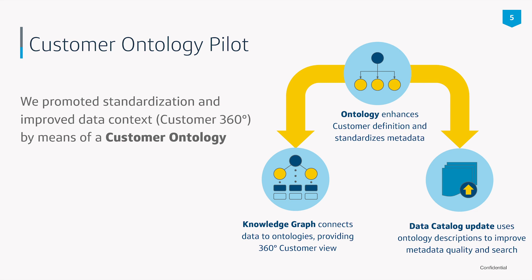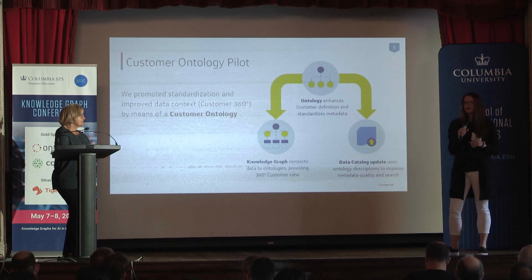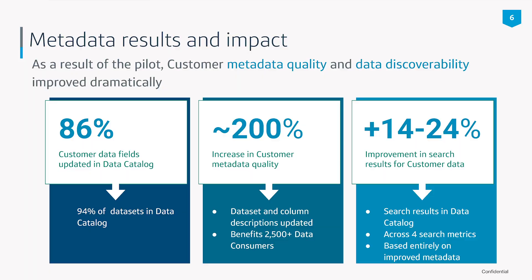In parallel, our metadata and semantics team did a couple of things. They first set a baseline for the metadata quality for our customer data, and then they developed tools that helped us automatically classify and relate the data to the ontology. Once those things were in place, we kicked off the pilot. The pilot itself lasted about three months. We connected the data and the ontology using a knowledge graph solution, and then we updated or augmented the metadata in our data catalog and measured the impact.